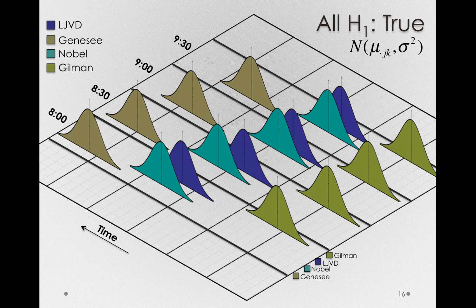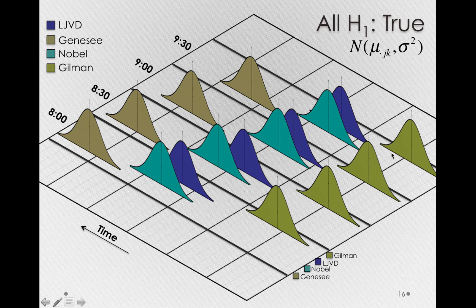This is a situation where all of the alternative hypotheses are true. There is a route effect — the routes differ in their average time. Looking across the time axis, we can also see a time of day effect, where average time descends across time bins. And we can see there's an interaction, as the different routes show slightly different time of day effects. Critically, notice that we're assuming equal variance — this is what our model assumes in order to draw correct p-values.